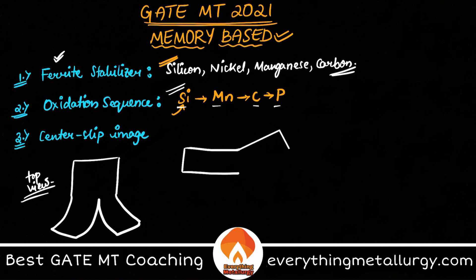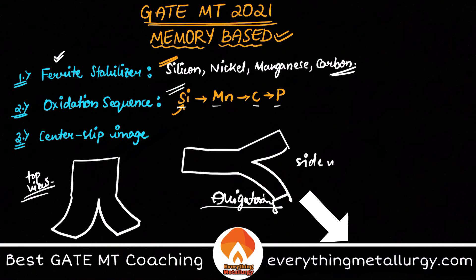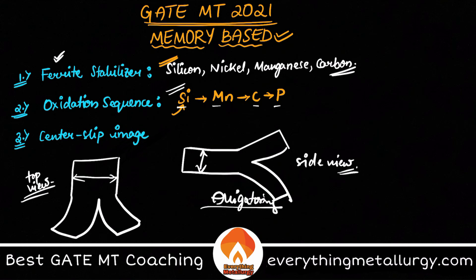Now, alligator ring is different. If you look at the thickness of the sheet from the side view, the splitting occurs along half the thickness — that is alligator ring. So the key difference: center split is a top-view defect splitting along the width or breadth, while alligator ring is a side-view defect splitting along the thickness. This is where students commonly get trapped.